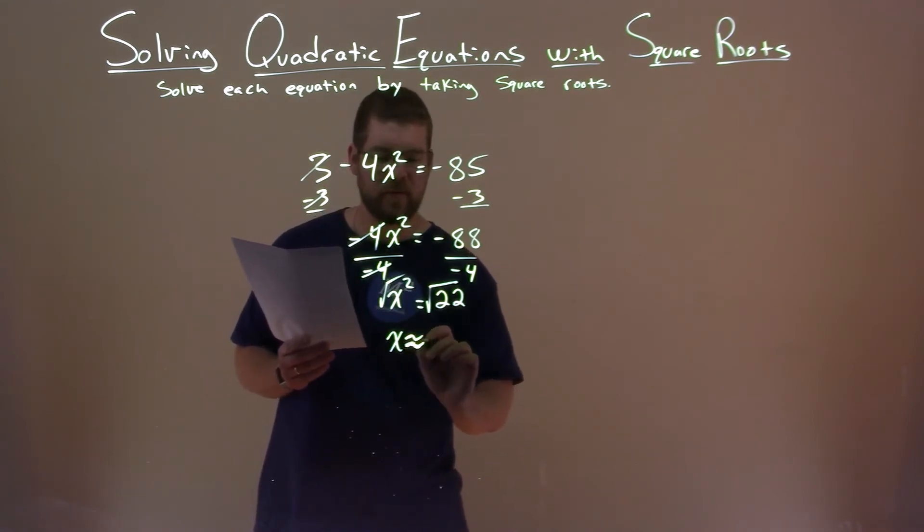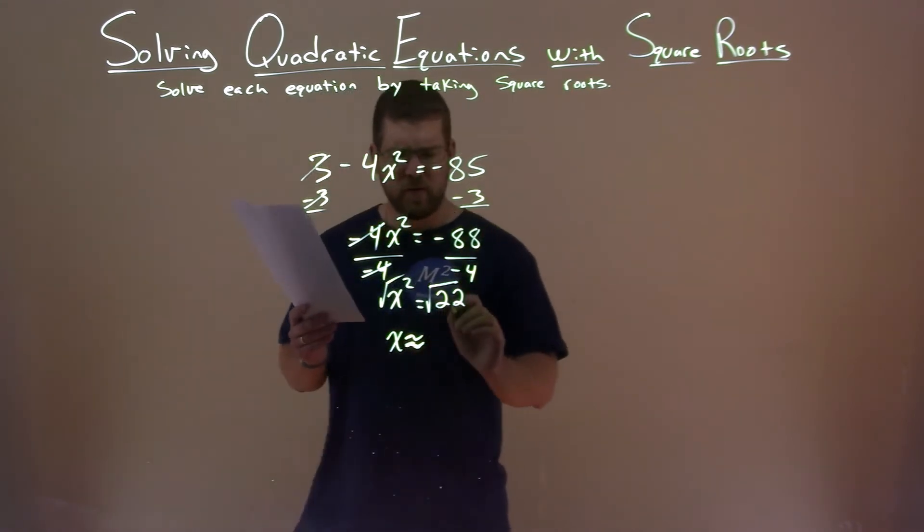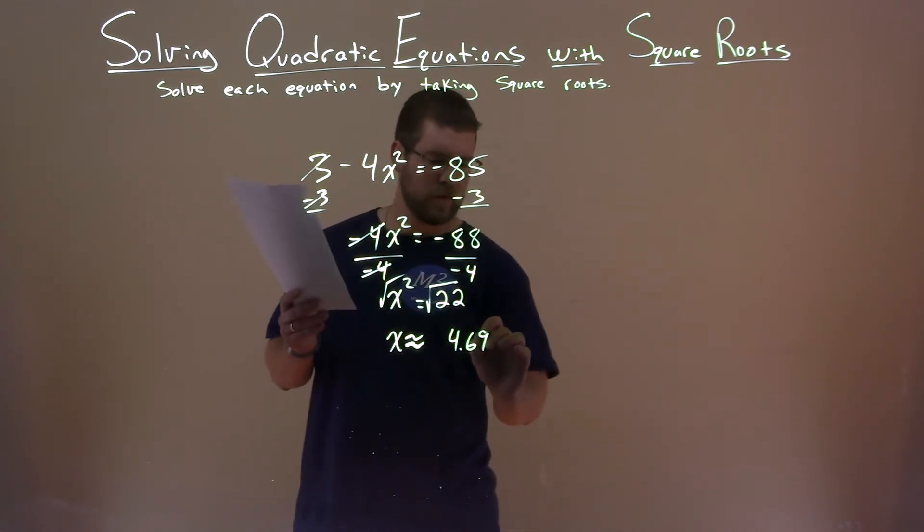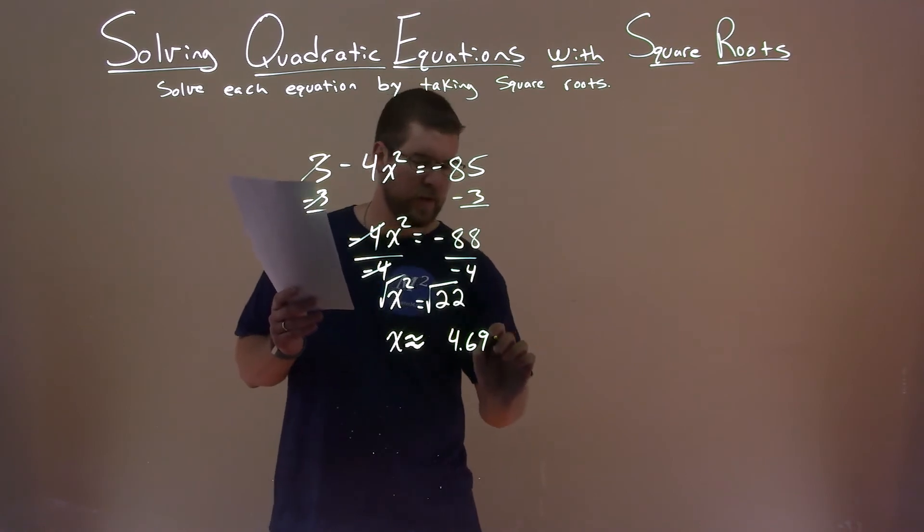If I can write an approximate symbol, there we go. Square root of 22 is approximately 4.690, around to three decimal places, but I can put that there to show I rounded.